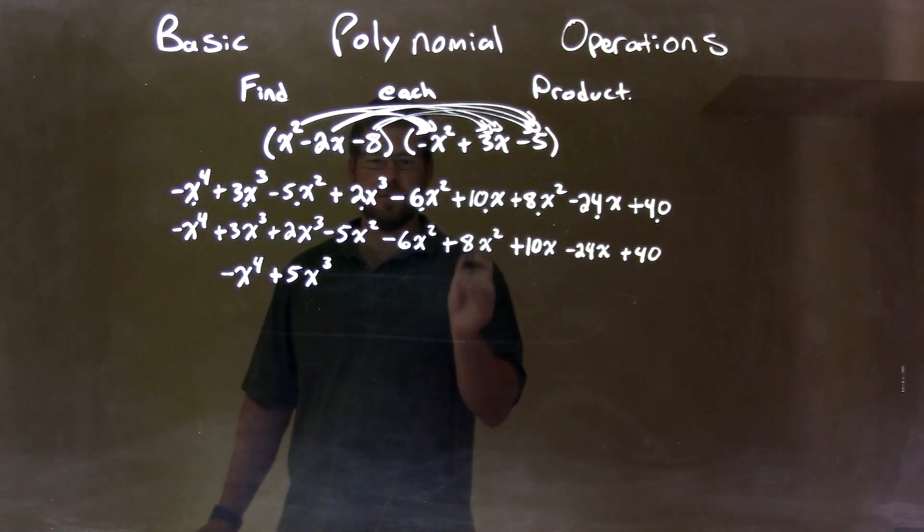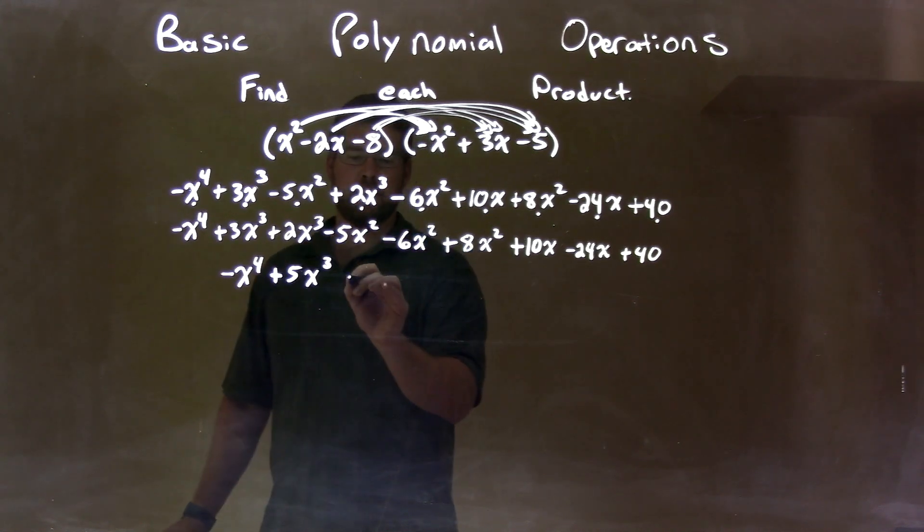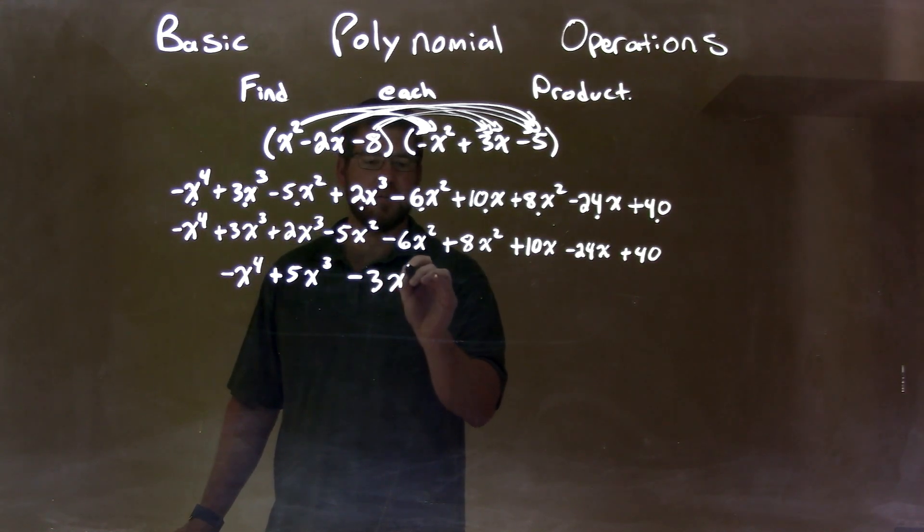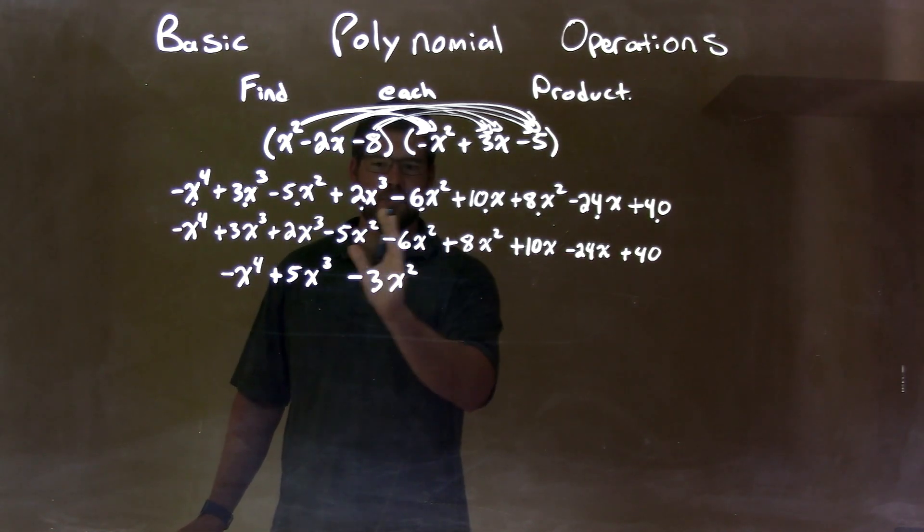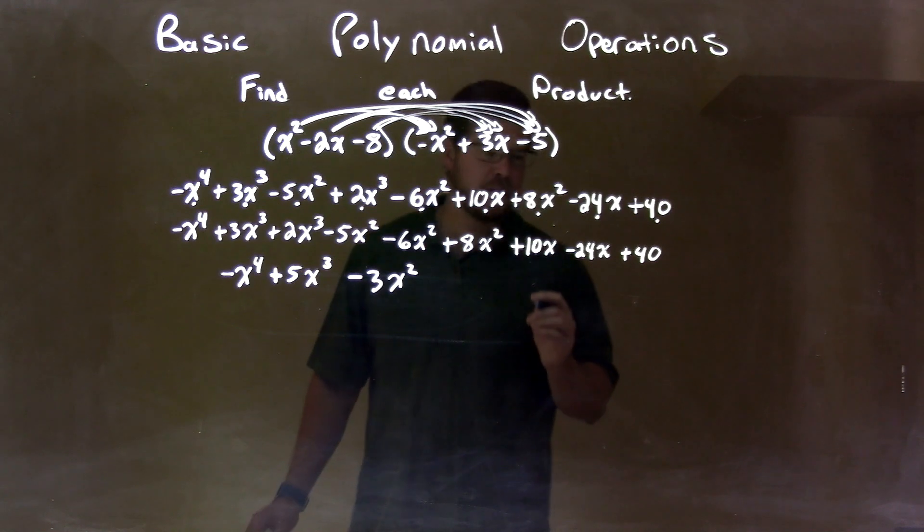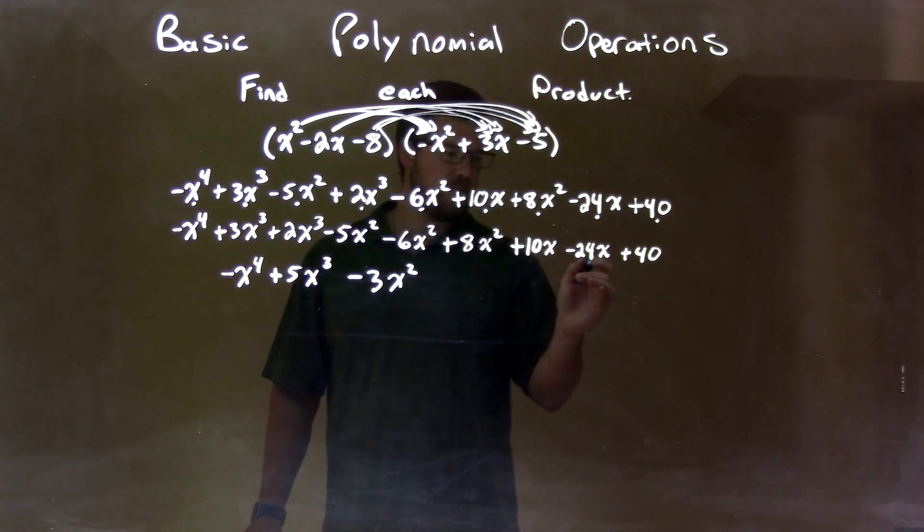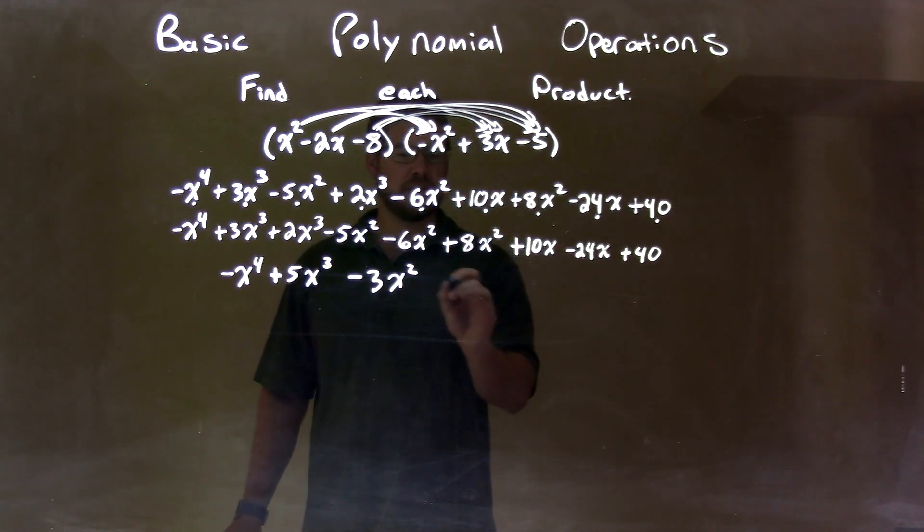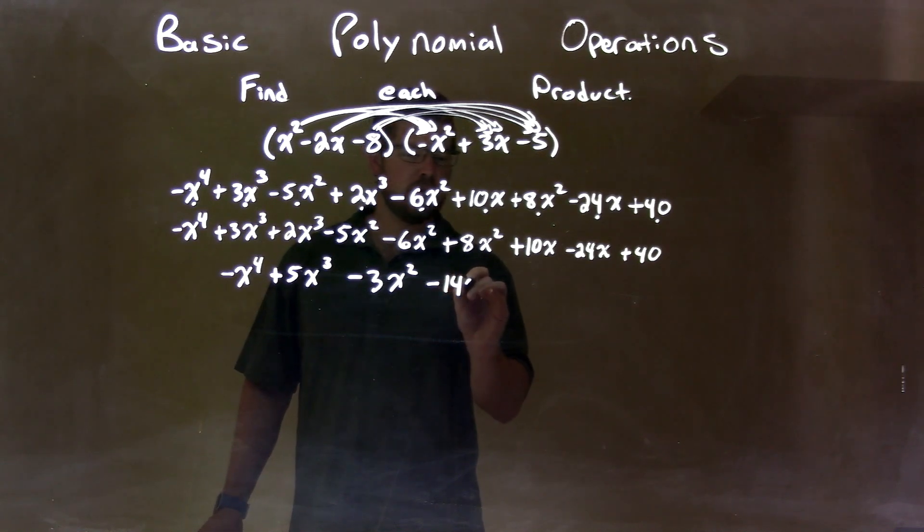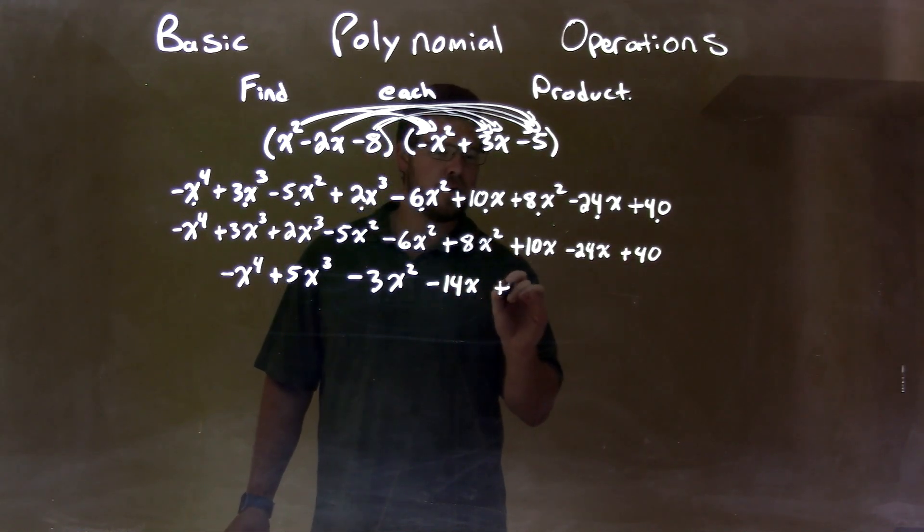Now, let's go with the squares here. Negative 6x squared plus 8x squared is a positive 2x squared. Plus a negative 5 is a minus 3x squared. Got the squares down. Bring down the x's. We have a negative 24x plus 10x, which is a minus 14x. And, we bring down the plus 40.